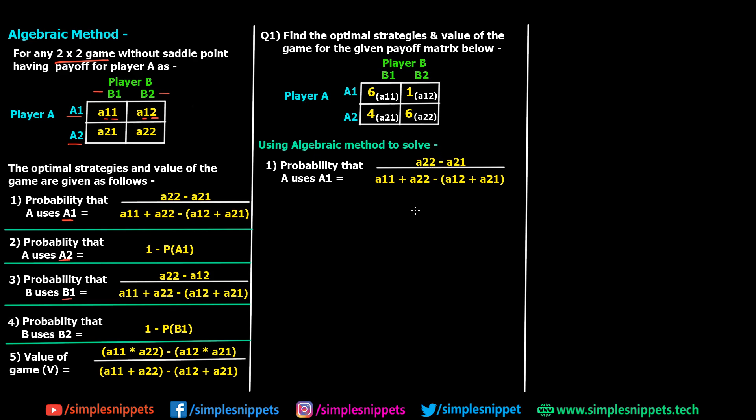A22 you can see is 6, so I'm going to write 6 minus A21, so A21 is 4. Then we have the whole divided by A11 which is 6, plus A22 which is again 6, minus A12 is 1, plus A21 is 4. So this is going to be 2 upon, so 6 plus 6 is 12, minus this is 1 plus 4 is 5, so it's going to be 2 by 7. So this is our first value, that is probability that A uses A1.